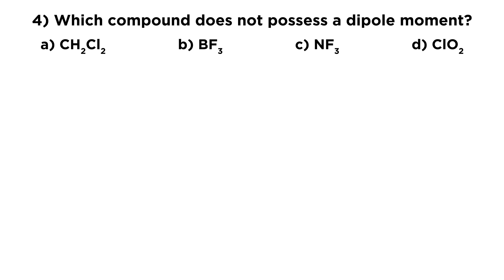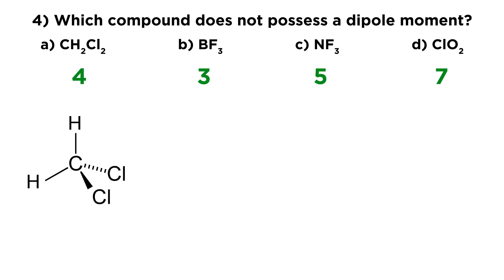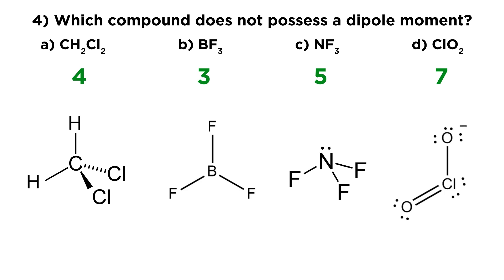For the fourth question, we're again asking which compound does not possess a dipole moment. Drawing the Lewis dot structures — carbon has four valence electrons, boron has three, nitrogen has five, and chlorine has seven. The four molecules are methylene chloride (CH2Cl2), BF3, NF3, and ClO2. The only completely symmetrical molecule is BF3. The boron-fluorine bonds are polar, but the precise trigonal planar orientation of those atoms means the bond dipoles cancel each other out, giving a net dipole of zero.